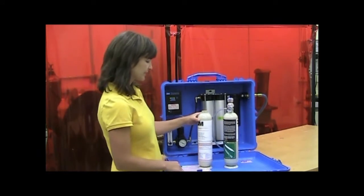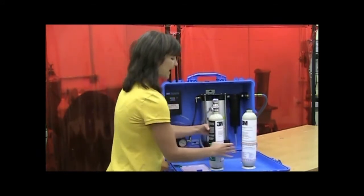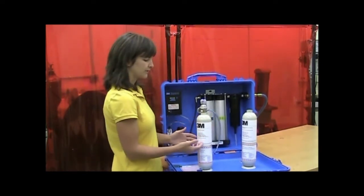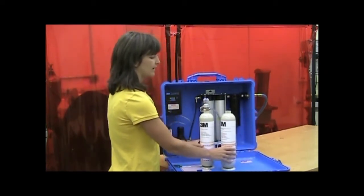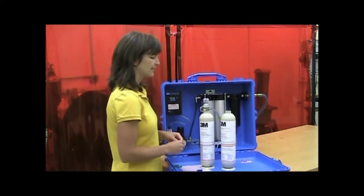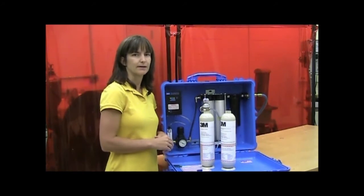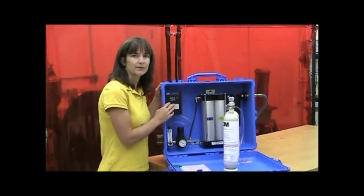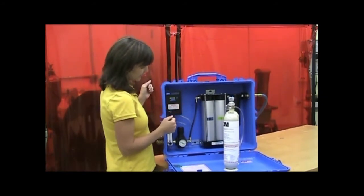The calibration itself consists of two parts. You've got a zero gas, so zero air. It's carbon monoxide free. It's actually a nitrogen gas. And then the carbon monoxide in the 3M kit is a 95 part per million carbon monoxide gas. You're going to want to make sure that the calibration gas itself is not expired. You also want to make sure your carbon monoxide monitor has been warming up for at least five minutes. This will help the calibration go a little bit smoother.